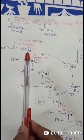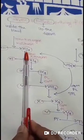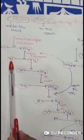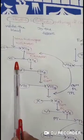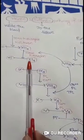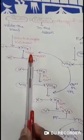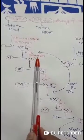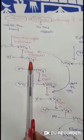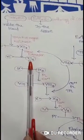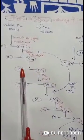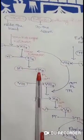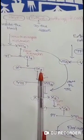This Activated Factor Number 12 in turn converts Factor Number 11 to Activated Factor Number 11, with the help of High Molecular Weight Kininogen. This Activated Factor Number 11 in turn converts Factor Number 9 to Activated Factor Number 9.